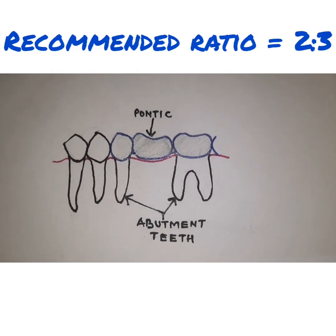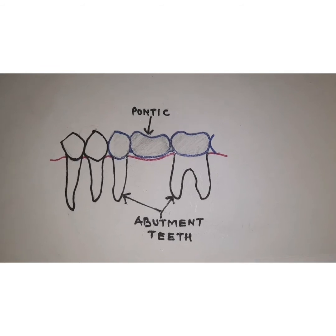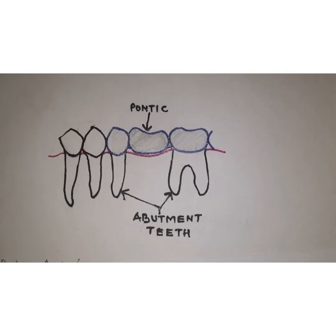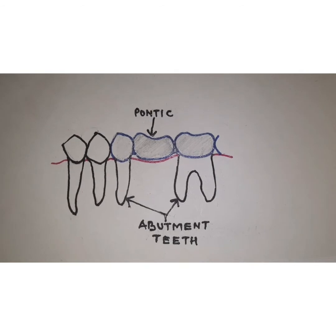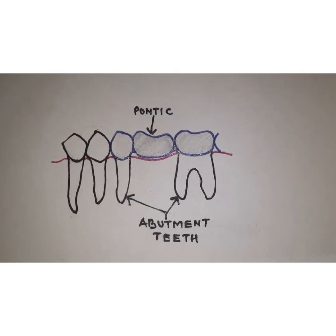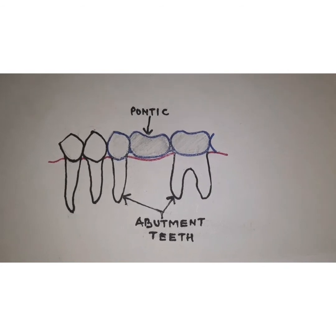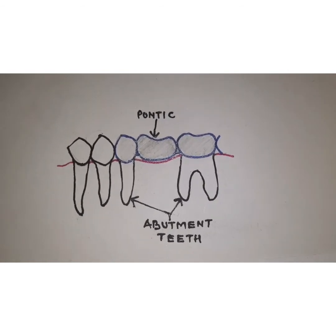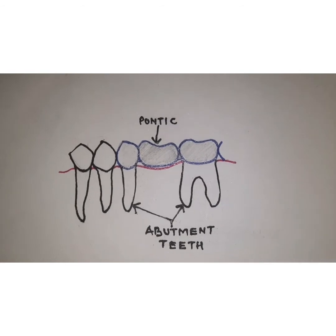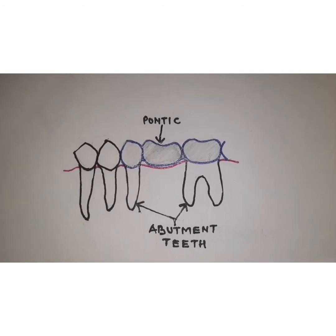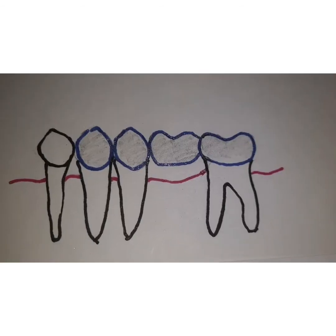Whenever we are selecting the abutment teeth, they should be carefully selected. We need to see the location of that tooth, what is the occlusion, the opposing occlusion, its angulation, the bone support, and very importantly the periodontal status of a particular abutment tooth before we decide to take it as an abutment tooth for fixed dental prostheses.